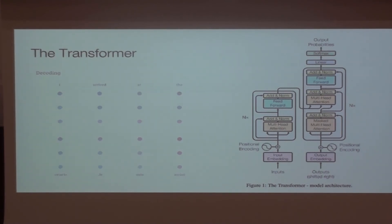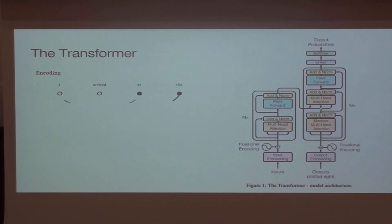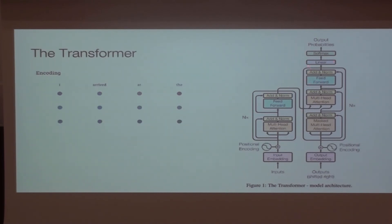If you want to use this as a language model — predicting the next word — you just remove the encoder entirely and only keep the decoder part. Then it learns to generate the next token conditioned on all previous ones.